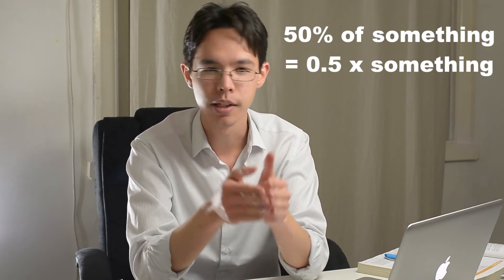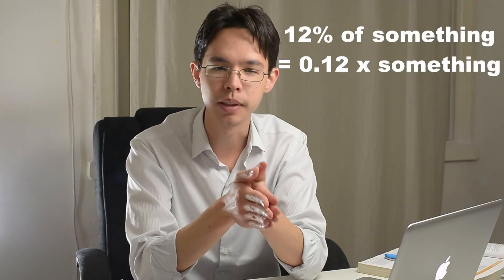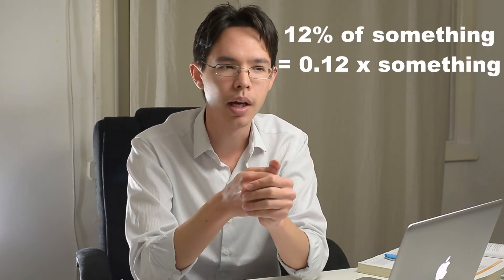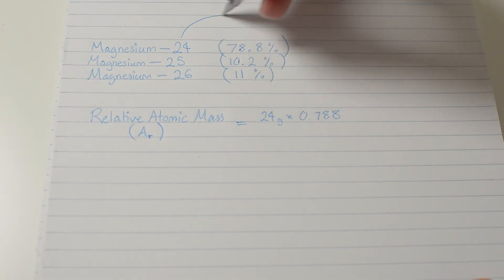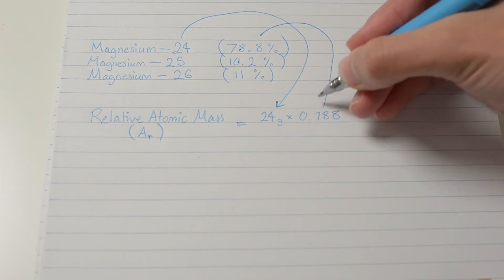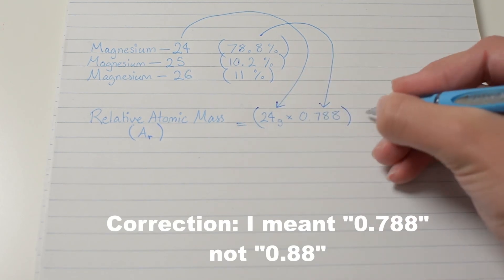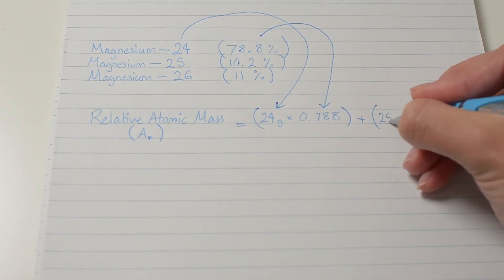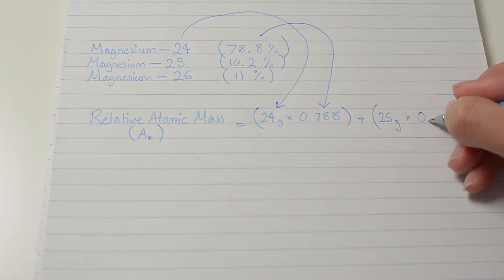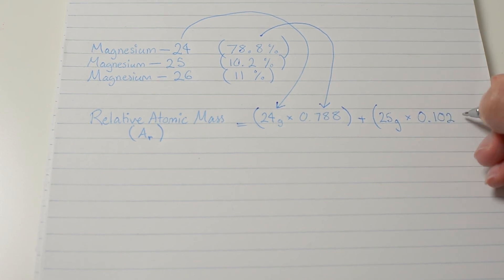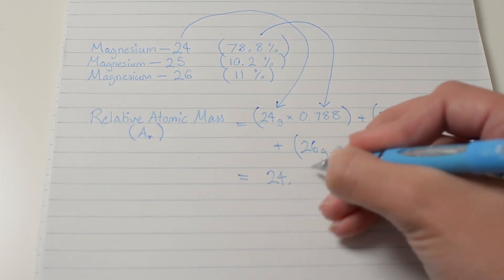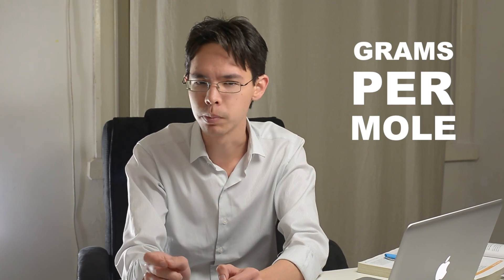Each percent value can also be expressed as a decimal multiplier — you've done it before. So 50% is the same thing as multiplying something by 0.5. Similarly, 12% means you multiply by 0.12. For each of the magnesium isotopes in this example, I've scaled magnesium-24 by a multiplier of 0.788, reflecting the 78.8% abundance, added to magnesium-25 multiplied by 0.102, reflecting the 10.2% abundance, and so on. Eventually you get a result of 24.322 grams per mole — though that unit will be covered in a later lesson.